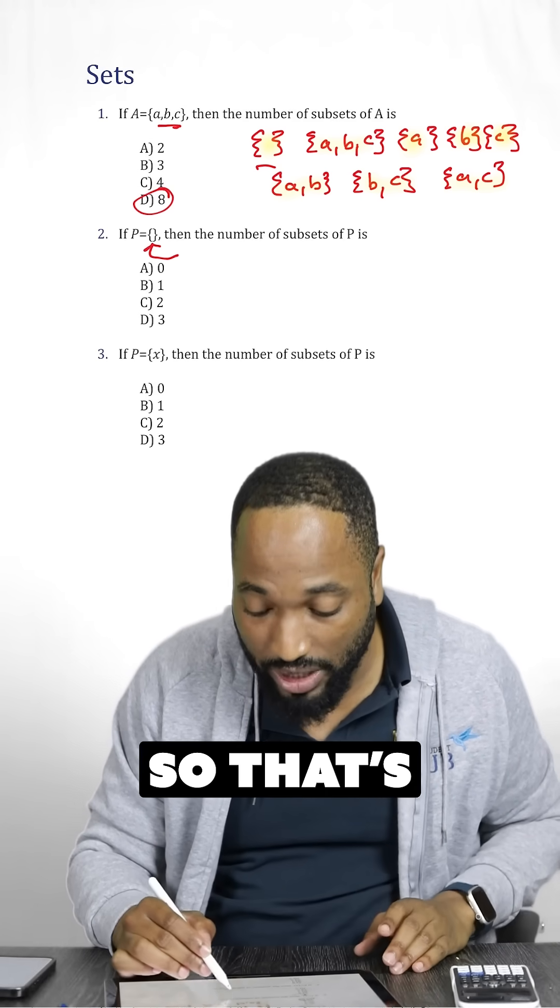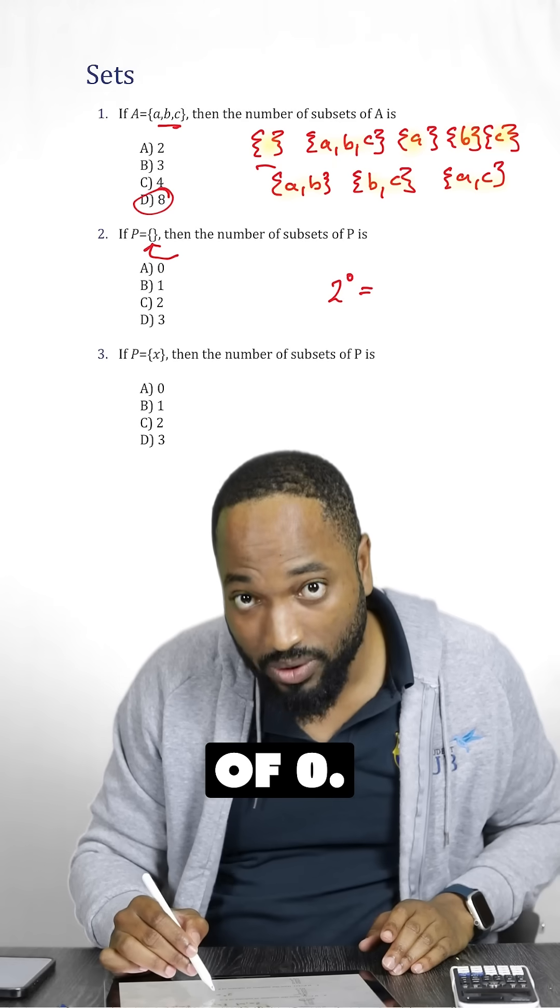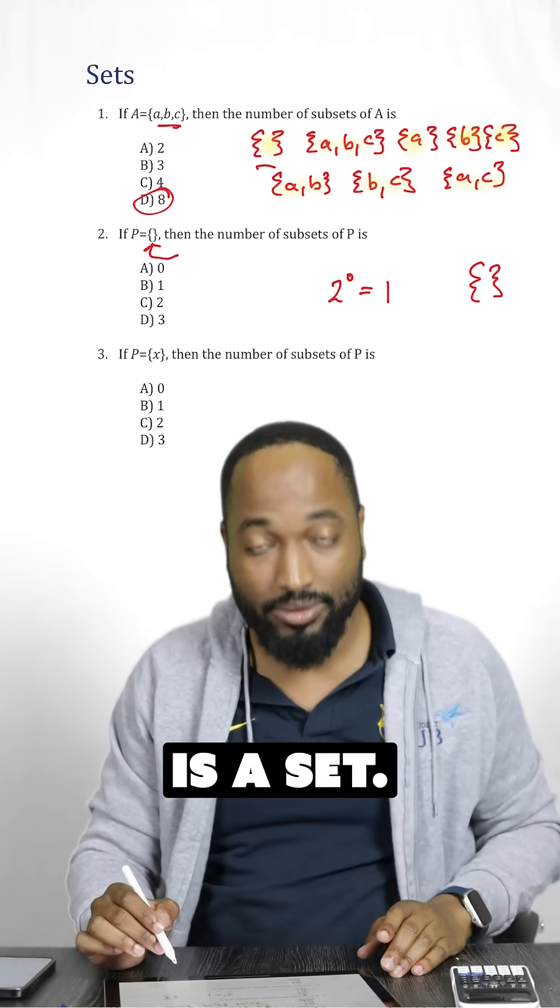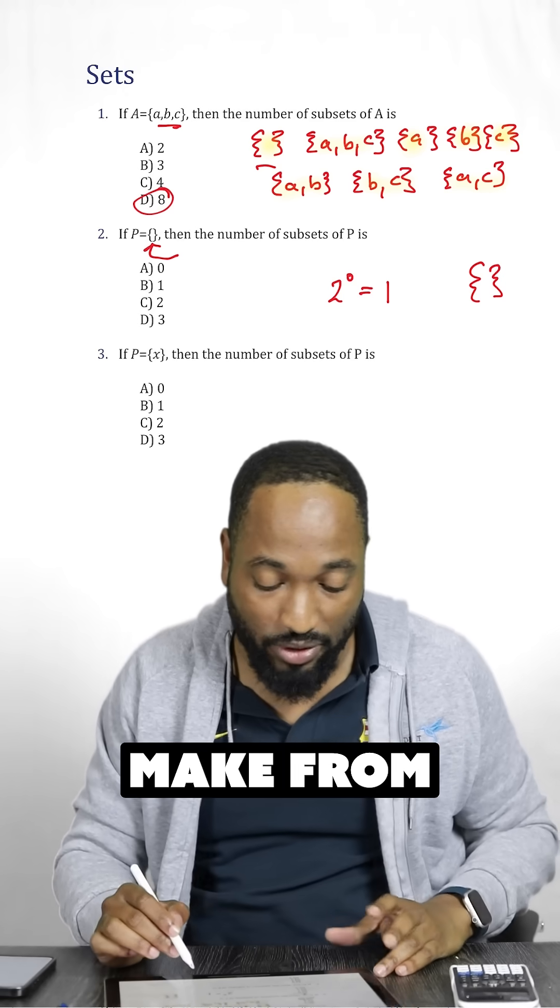Second question has 0 elements, so that's 2 to the power of 0. That's not 0, that's 1. Because the empty set is a set, so it has one set that you can make from it, that's the subset.